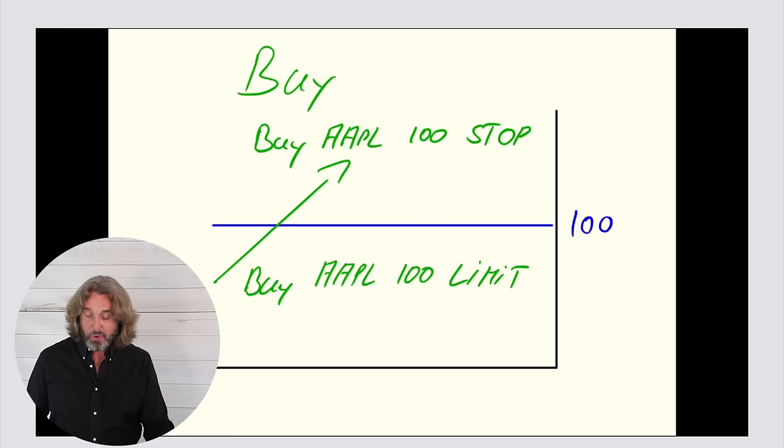A stop order is being executed as soon as prices move above the price if you're trying to buy it. So as soon as we move above 100, you're buying it. So if Apple opens the next day at 110, you're buying Apple at 110.